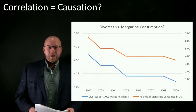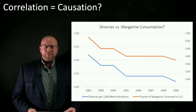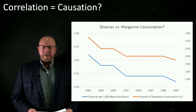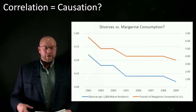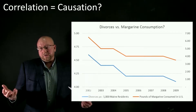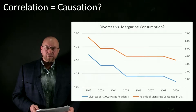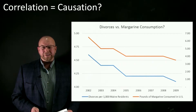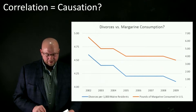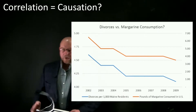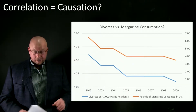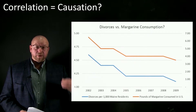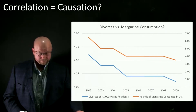Another example: divorces in Maine are highly correlated with the consumption of margarine in the United States — interesting, but there's probably no causation there. So we have to make sure that the cost driver does a good job of explaining how costs change.